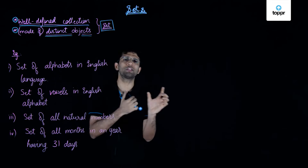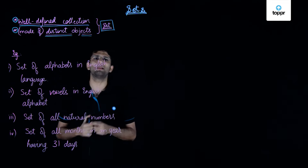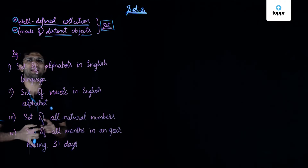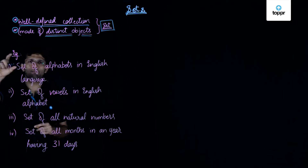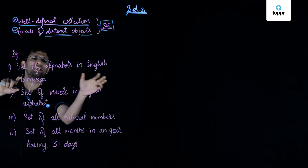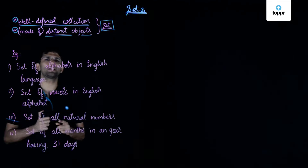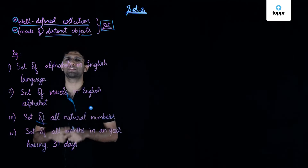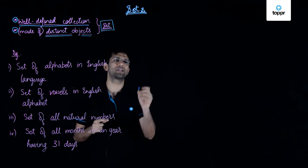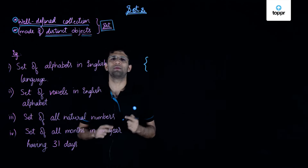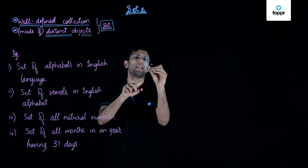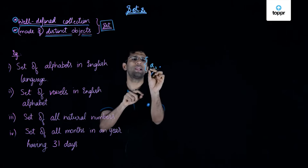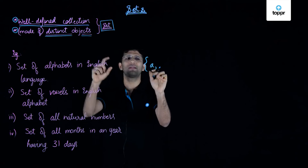Let us first understand the term elements of a set in detail. We will look at examples of a set and then understand the elements of a set. The first example of a set can be the set of alphabets in the English language. We know that the English language consists of alphabets from A to Z, and if we represent the alphabets in lowercase, we will say that small letter A is an element of this set.